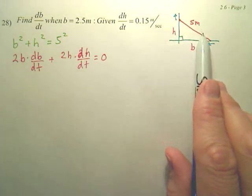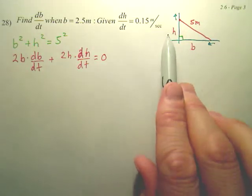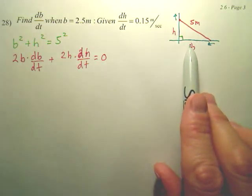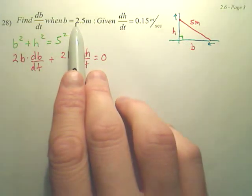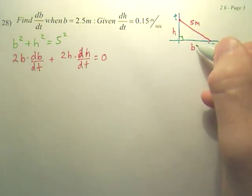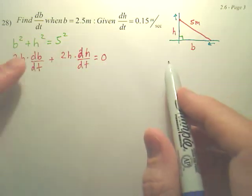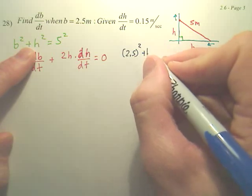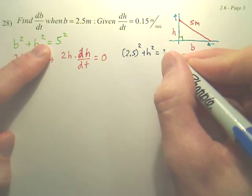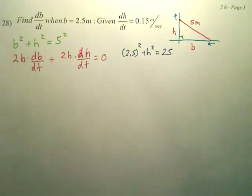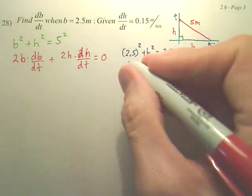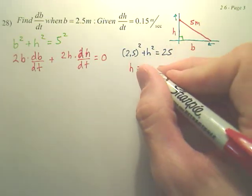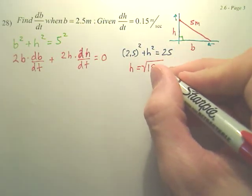But is that pretty easy to find h using this? Using Pythagorean theorem. Do we know that b is 2.5? Yes. So if I go back to this, put b as 2.5. Go with the original equation. So 2.5² + h² = 25. Can I solve for h?